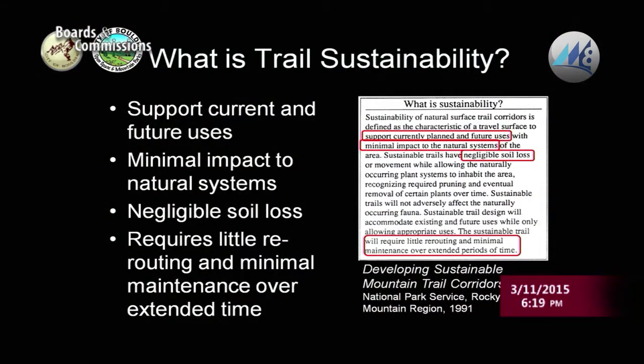What is trail sustainability? That word gets used a lot in regards to trails, so I want to talk about a common definition. The definition comes from a longstanding National Park Service document from 1991, which defines trail sustainability as a trail that supports current and future anticipated uses, has minimal impact to the natural systems of the area, has negligible soil loss or erosion from the trail surface, and requires little rerouting and minimal maintenance over extended periods of time.